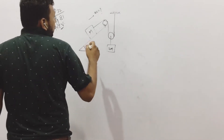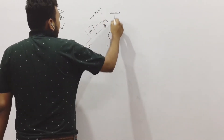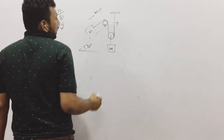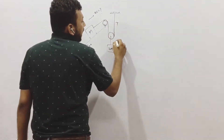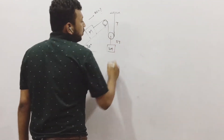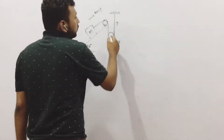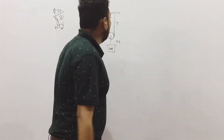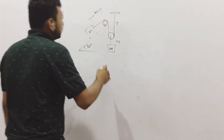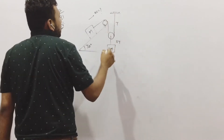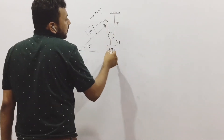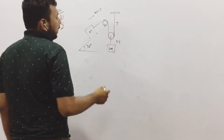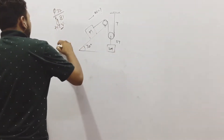So how do you solve it? Suppose the tension in this string is T. This is one string with tension T, and this is another string with tension 2T. T and T combine to form 2T.